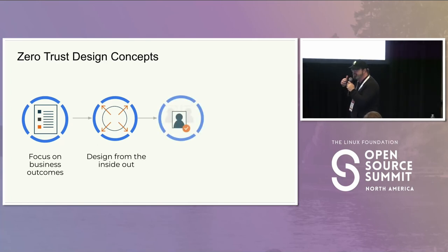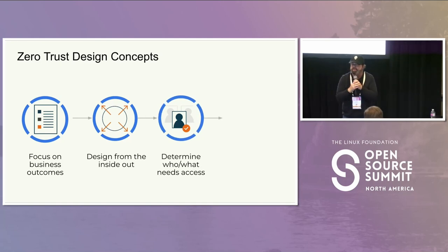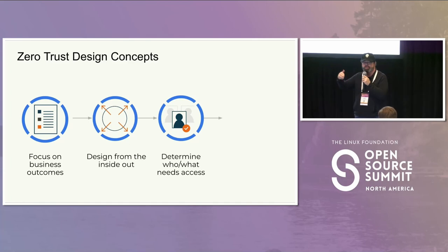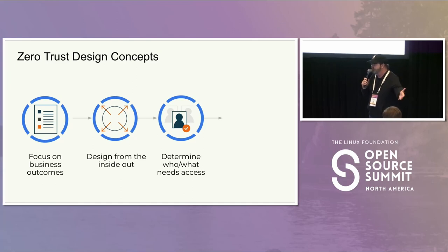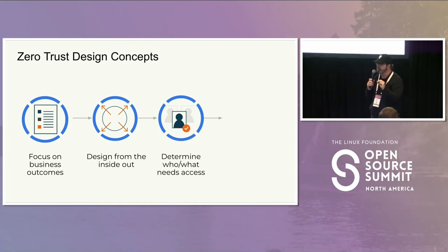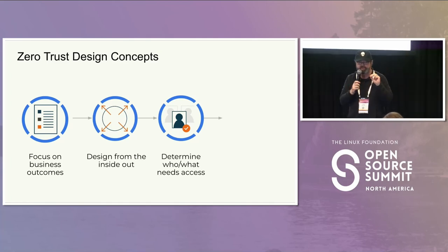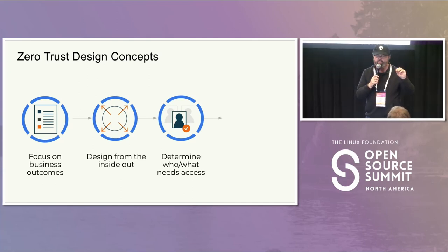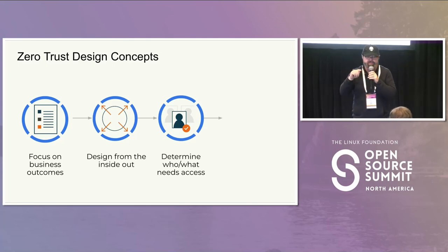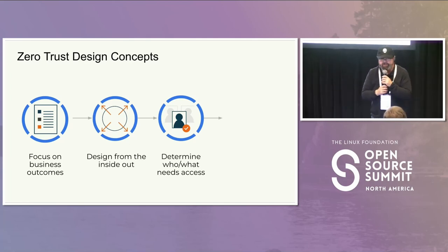The third design concept is to determine who or what needs to have access — need to know, least privilege. Both Snowden and Manning had access to everything on that super secret secure network because they had authenticated into it. There wasn't actually least privilege — no one knew what they were doing. Snowden asked the NSA person at the forward operating base whether they were looking for malicious activity on the internal network. The answer was no — they only looked at activity coming in from outside. The attack vector for both was the trust model.